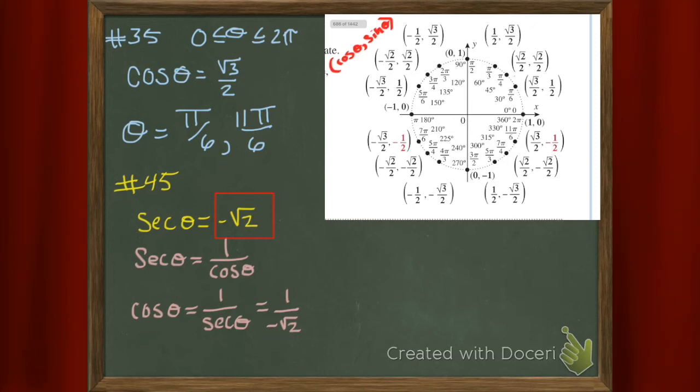And you rationalize because it's the right thing to do. And then you've got minus root 2 over 2. But that's the cosine. That same angle is going to make the secant minus root 2. So let's go find that on our unit circle.